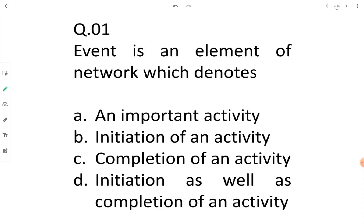Question: An event is an element of a network which denotes — options are: an important activity, initiation of an activity, completion of an activity, or initiation as well as completion of an activity. An event is an instant of time that denotes either the start or completion of an activity — that is, either initiation or completion of an activity.